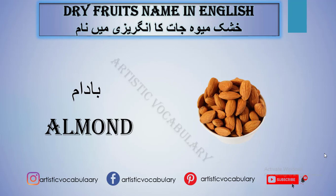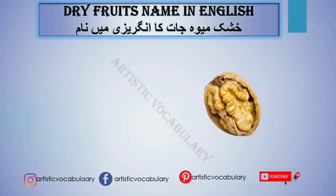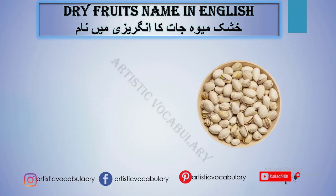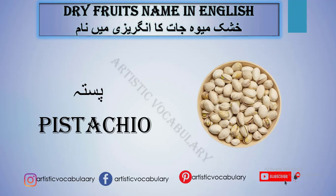Next word is Akhrot. Akhrot means Walnut. Next word is Pista. Pista is called Pistachio in English.